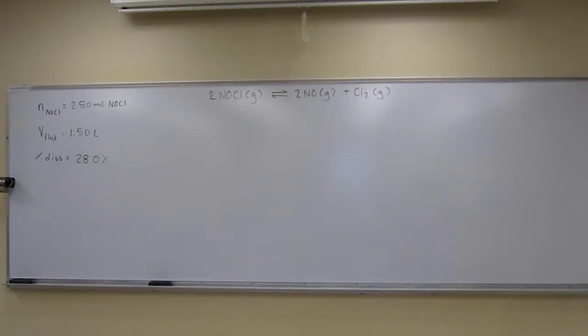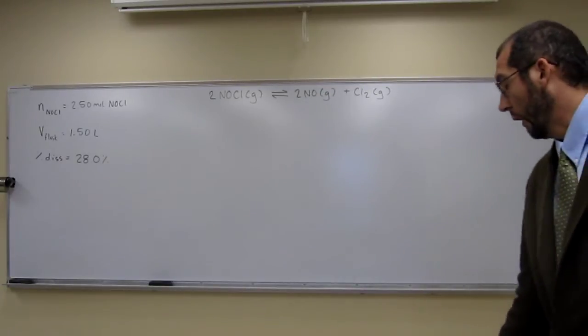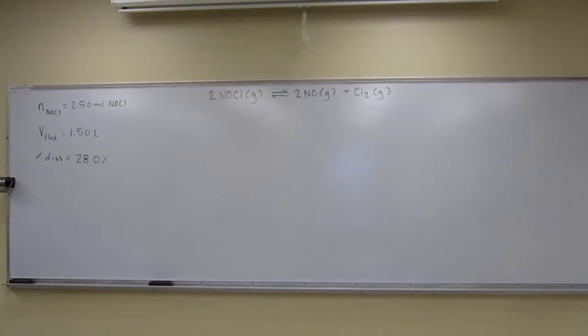Okay, so let's try this one. It says 2.50 mole quantity of nitrosyl chloride was initially in a 1.50 liter reaction chamber at 400 degrees Celsius. After equilibrium was established, it was found that 28.0% of the nitrosyl chloride had dissociated. It gives you the reaction equation up there, and it wants you to calculate the equilibrium constant for this reaction. That's all it gives us, and we need to calculate the equilibrium constant.